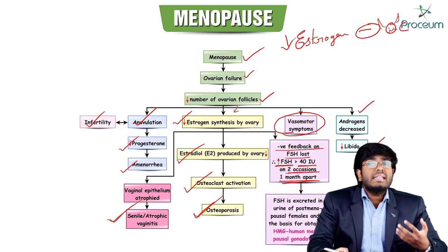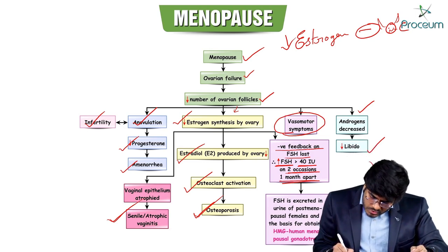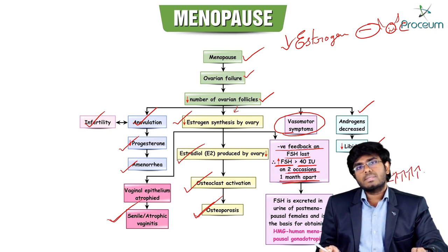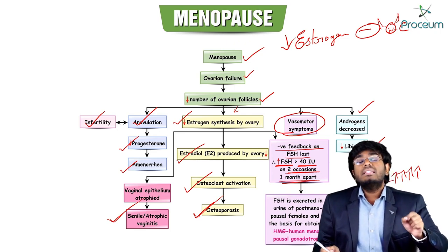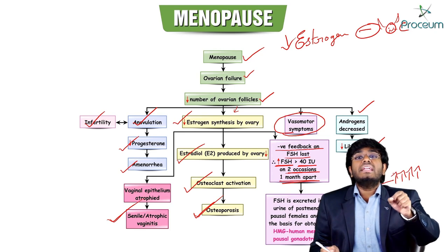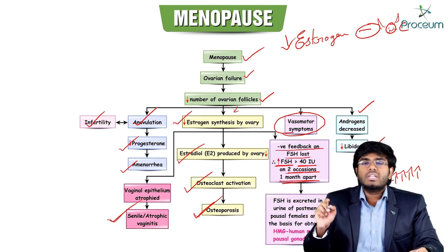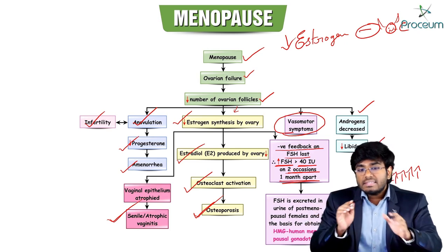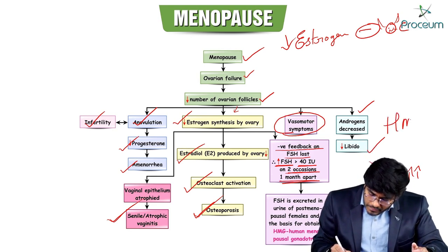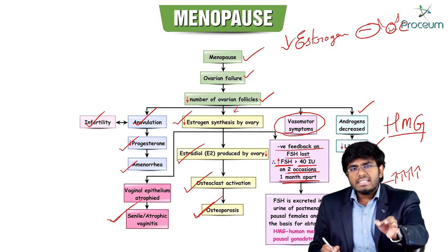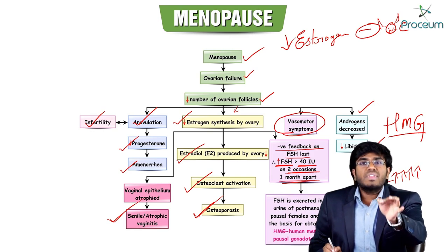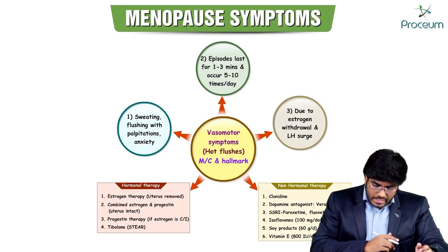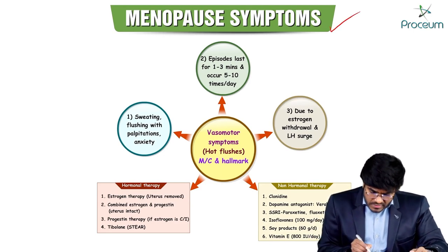These high FSH levels are excreted in the urine of post-menopausal women. This excess FSH can be extracted from urine and used medically for ovulation induction in females with anovulation. This extracted FSH is known as human menopausal gonadotropin (hMG) — FSH extracted from the urine of post-menopausal women.